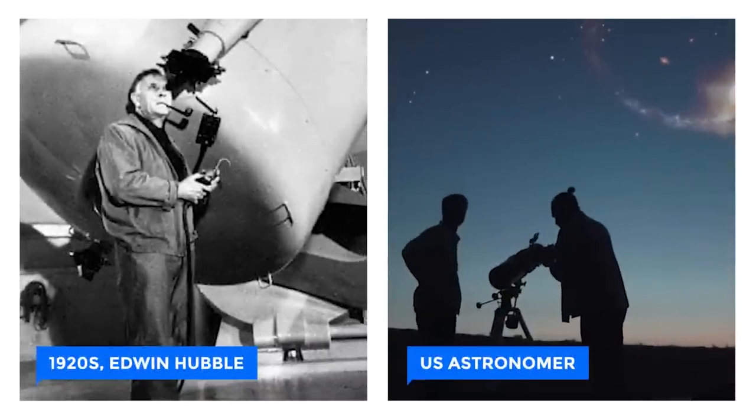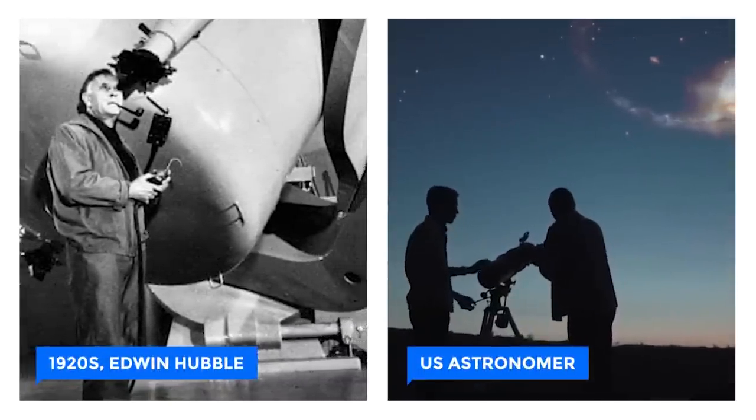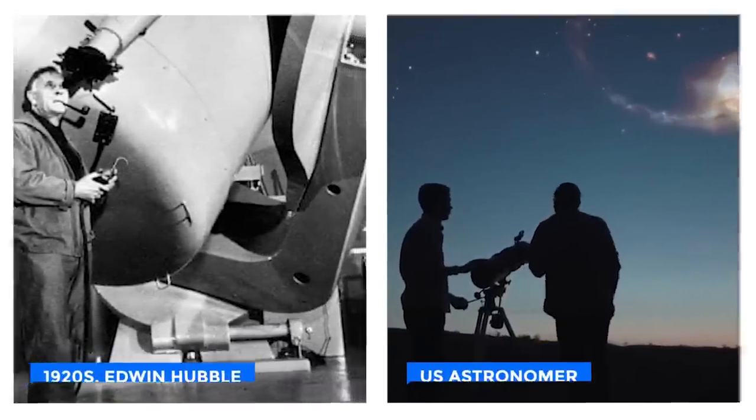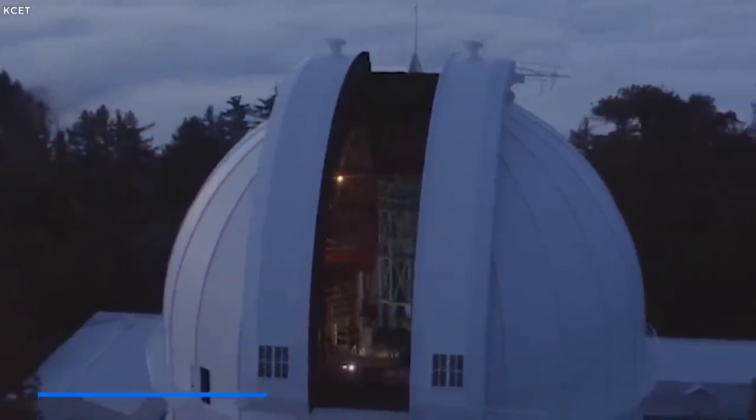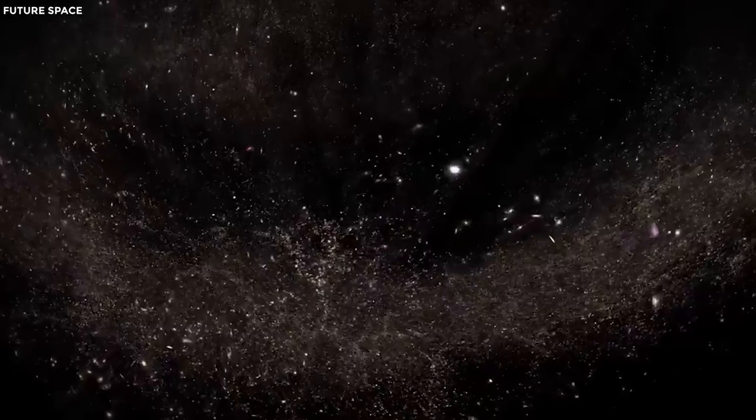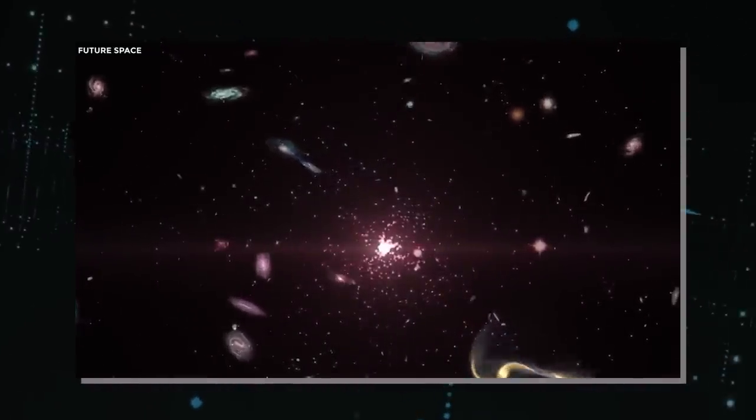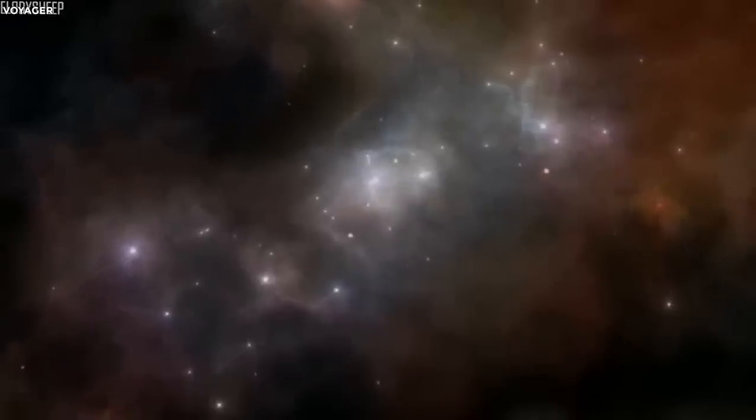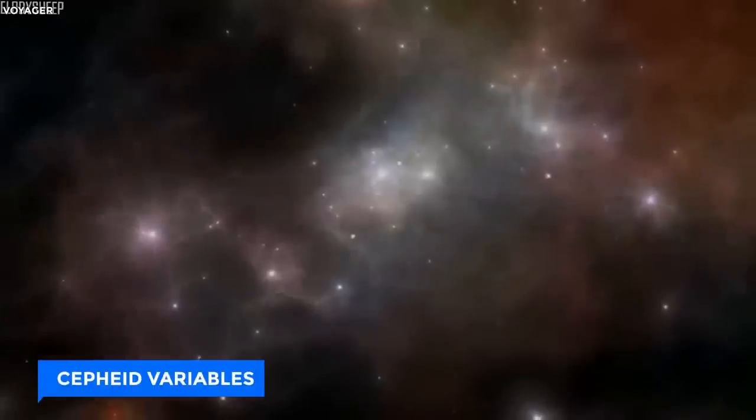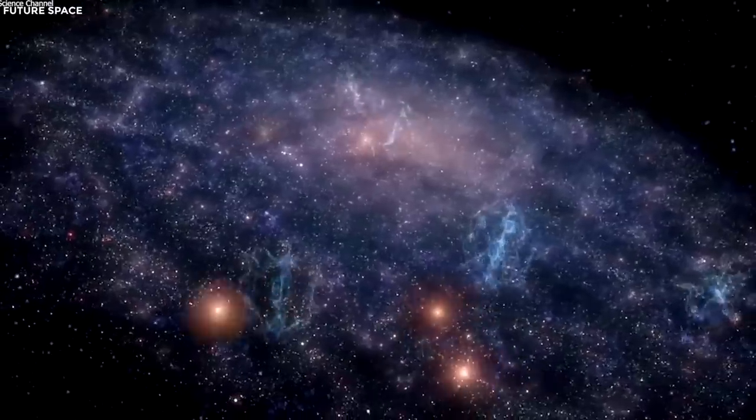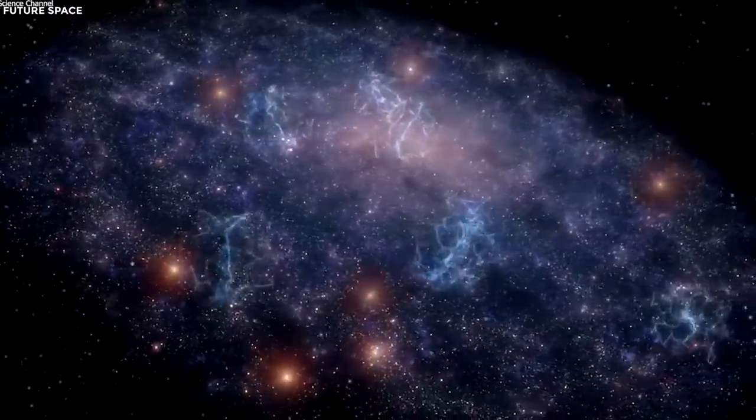In the 1920s, Edwin Hubble, a U.S. astronomer, took the celestial stage. Using the Hooker telescope at Mount Wilson Observatory, he reshaped our universe's story. Imagine Hubble as a cosmic detective diving into Andromeda's details. He focused on special stars called Cepheid variables within Andromeda. These stars held a secret of a pulsating dance echoing in the cosmos.